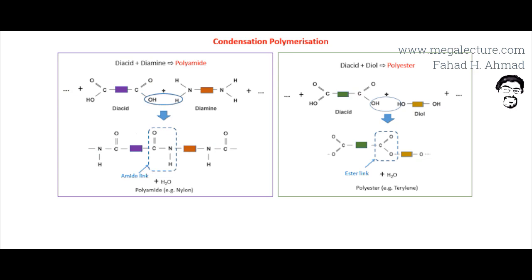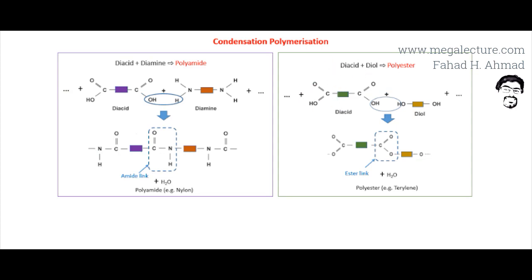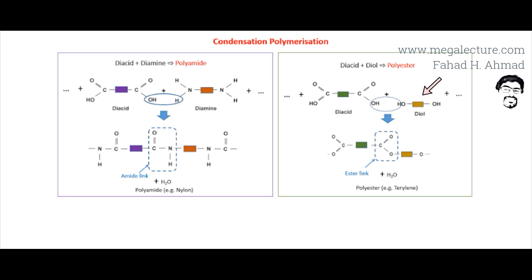The other polymer is polyester. For polyester, you again have two monomers. One is a dicarboxylic acid — exactly like in polyamides, a carboxylic acid group on both sides of the molecule, represented by a box. The other monomer has OH groups on both sides, and these two types alternate and repeat.